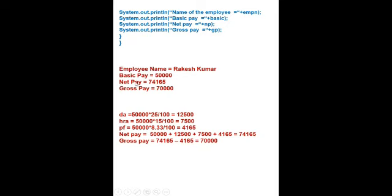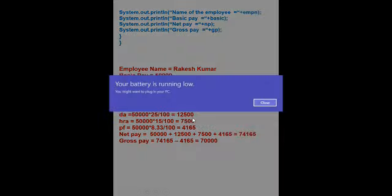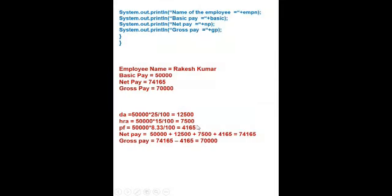This is an example. Suppose the employee name is Rakesh Kumar and basic pay is 50,000. DA will be 12,500, HRA will be 7,500, and PF will be 4,165. Then net pay: 50,000 basic plus 12,500 plus 7,500. We will not add the PF value here because this is the net pay formula, not gross pay.